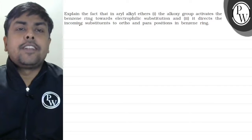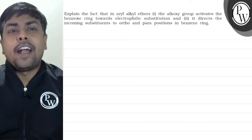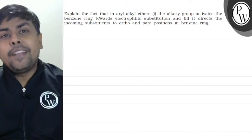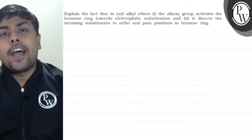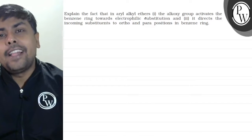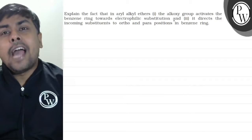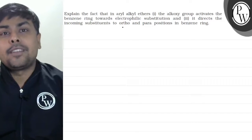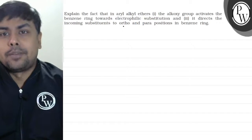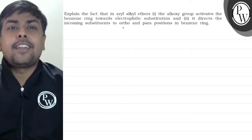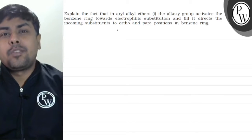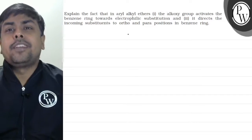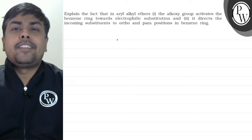Hello, children. Let's read the question. The question says: Explain the fact that in aryl alkyl ether, the alkoxy group activates the benzene ring towards electrophilic substitution and it directs the incoming substituents to ortho and para positions in the benzene ring.